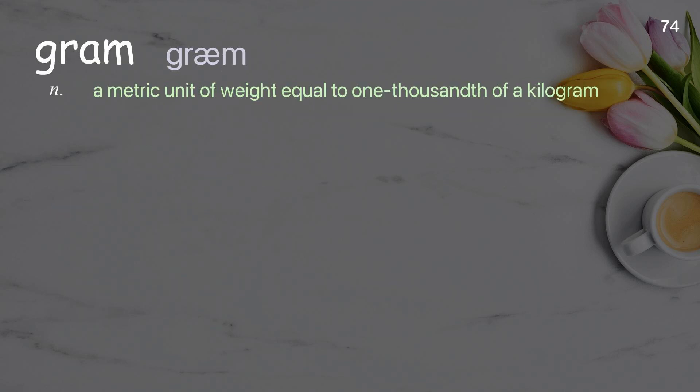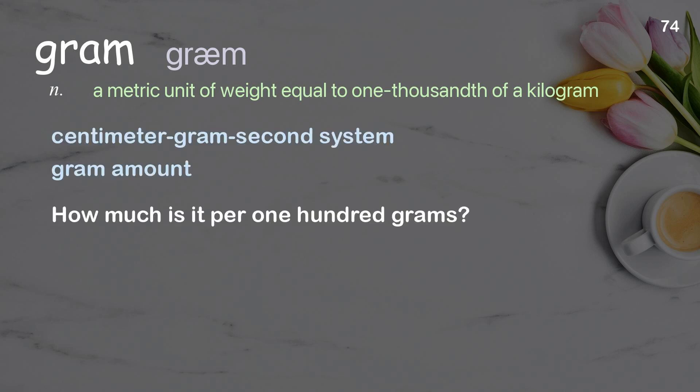Gram: a metric unit of weight equal to one-thousandth of a kilogram. How much is it per 100 grams?